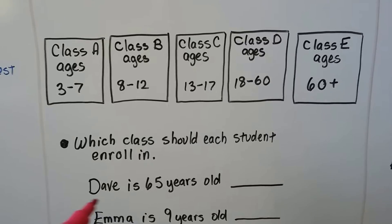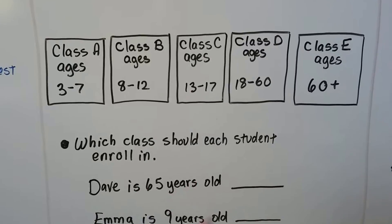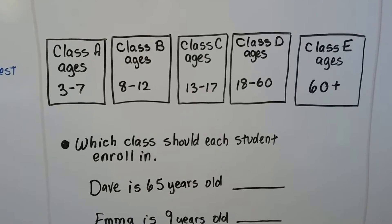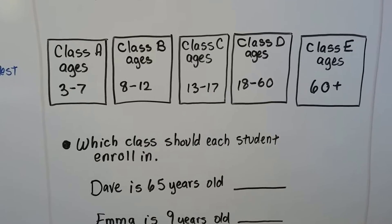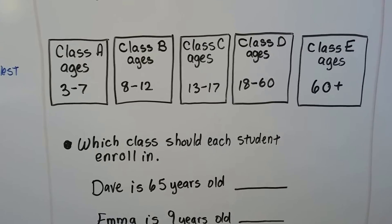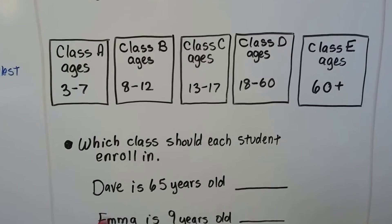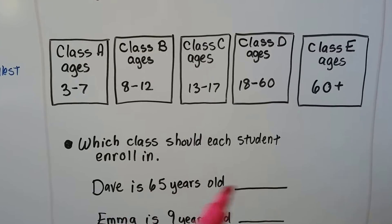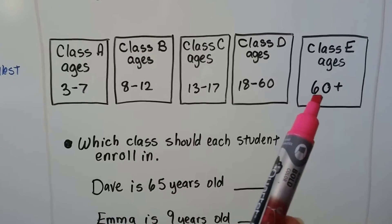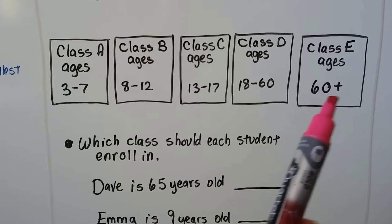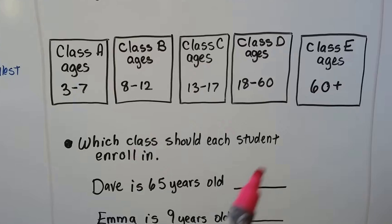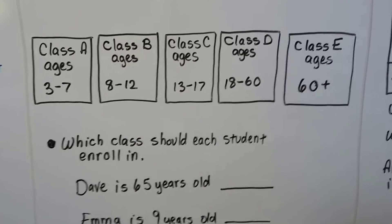Dave is 65 years old. Which class should he be in? Well, 65 is greater than 60, so that would be the 60-plus class. He would be in Class E.